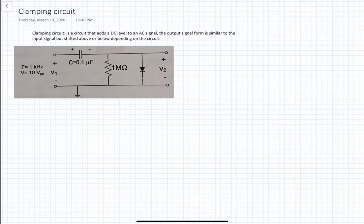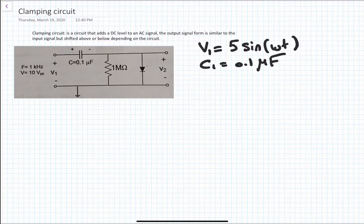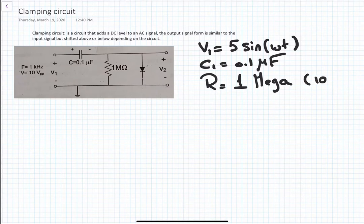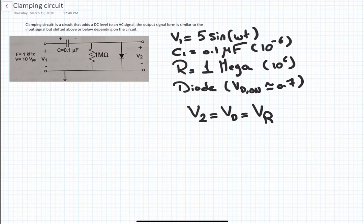This circuit is taken from your lab book. We have a given input signal V1 equal to 10 volts peak-to-peak sine wave, which is 5·sin(ωt). C1 is 0.1 microfarad, R is 1 megaohm which is 10^6, and the diode with Vd(on) approximately 0.7 volts.